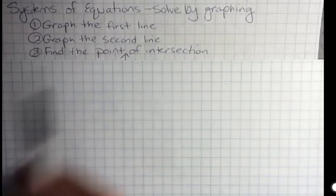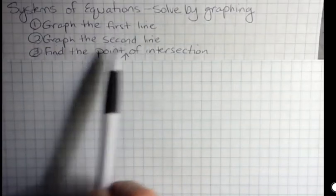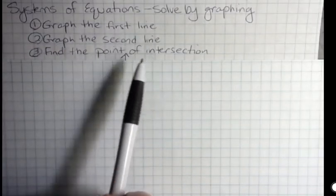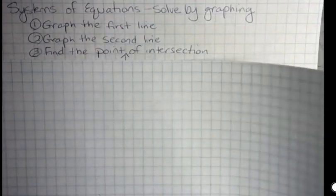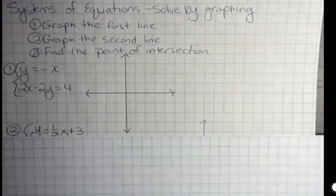And what you're going to do is graph the first line, graph the second line, and then find the point of intersection if it has one. So we have to know how to graph to do this method.